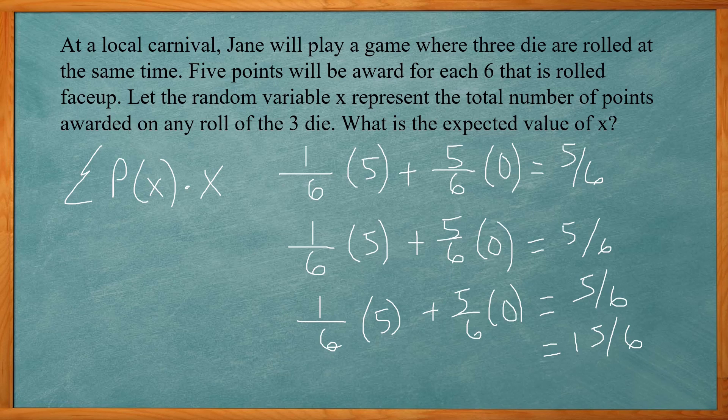And you write that as a mixed number. That's going to be two - that'll give you 12 and three left over - three sixths, or two and a half. So our answer, our expected value for X would be two and a half points.